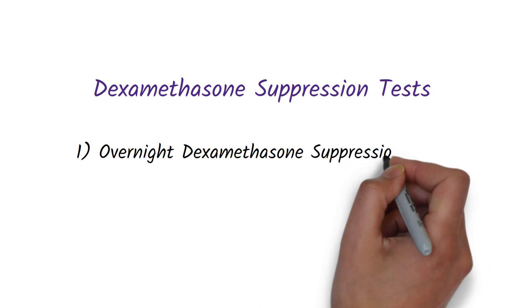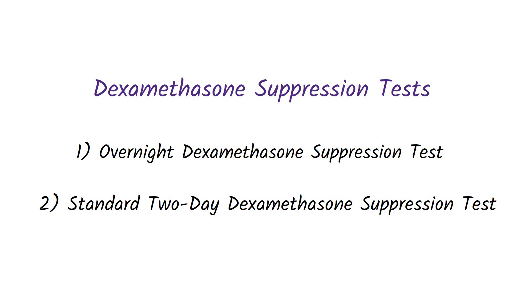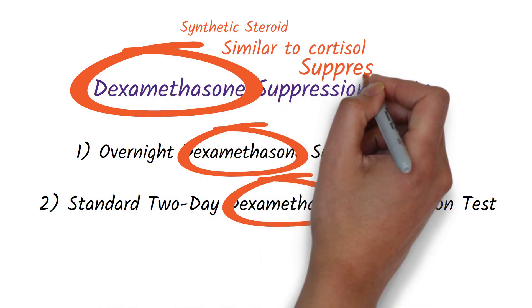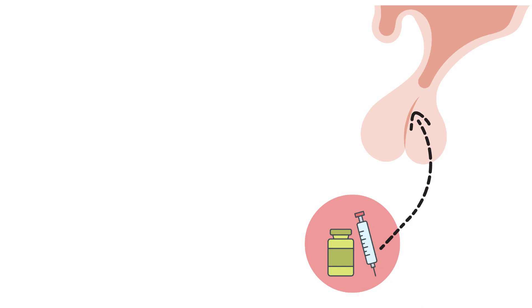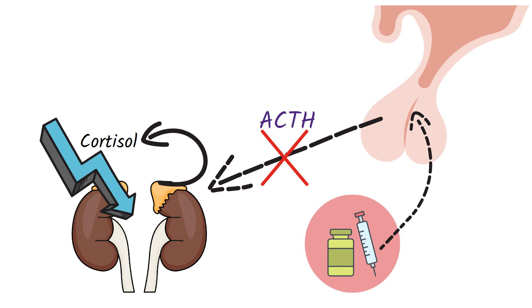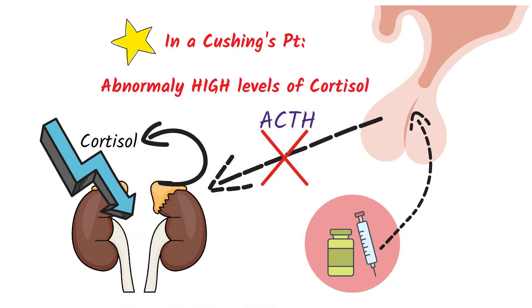The last two tests are dexamethasone suppression tests: the overnight dexamethasone suppression test and the standard two-day dexamethasone suppression test. Dexamethasone is a synthetic steroid similar to cortisol which suppresses ACTH. In a normal person, a dexamethasone injection can inhibit ACTH secretion by the pituitary, causing a drop in cortisol level in serum, urine, and saliva. However, such inhibition does not occur in patients with Cushing's syndrome.